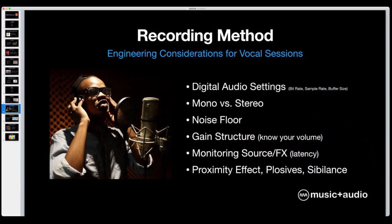Let's talk about recording method. Once you've got all your stuff ready, how do you actually make use of it and get a session started? The very first thing to consider for your DAW session is your digital audio settings: bit rate, sample rate, and buffer size. This is going to affect the format of the file you're recording to and the way your system is working as it captures audio.